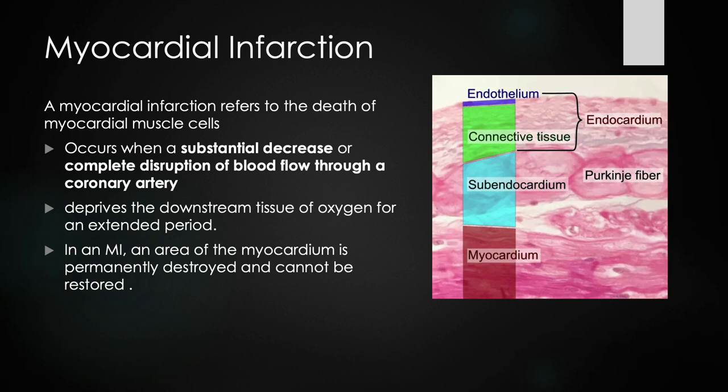The heart and cardiomyocytes have way more mitochondria than most other tissues in the body because it is primarily an aerobic tissue. It likes to use and metabolize fatty acids through mitochondria and oxidative phosphorylation to make ATP. When the heart starts experiencing complications, it starts to shift towards more glycolytic pathways, which is not ideal for this type of muscle.